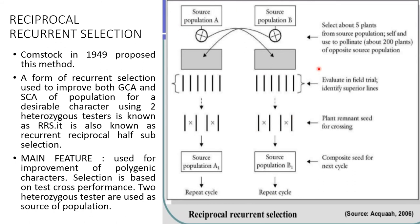Reciprocal recurrent selection: a form of recurrent selection used to improve both general combining ability and specific combining ability of a population for a desirable character, using two heterozygous testers, is known as reciprocal recurrent selection. It is also known as recurrent reciprocal half-sib selection. Its main feature is improvement of polygenic characters, selection based on test cross performance, and two heterozygous testers used as a source population.